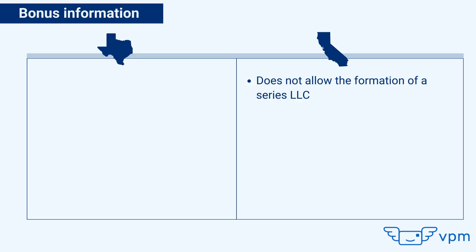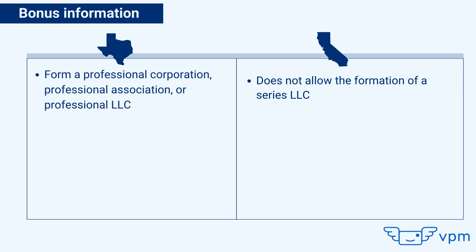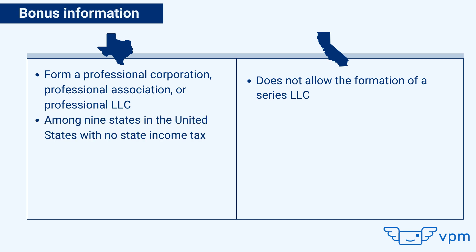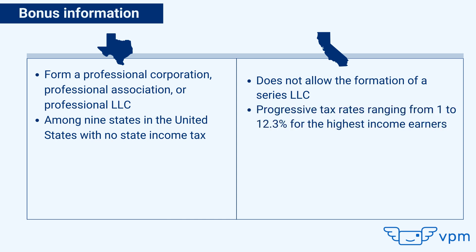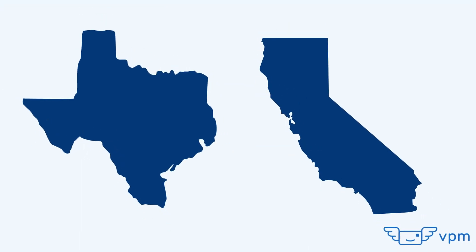Some other things to note: California does not allow the formation of a series LLC, while Texas does. In Texas you can form a professional corporation, professional association, or professional LLC; in California you cannot. Lastly, Texas is among nine states in the U.S. with no state income tax, compared to California's progressive tax rates ranging from 1% to 12.3% for the highest income earners. Have you decided which state to form your LLC in yet? If you have more questions, leave them in the comments below.